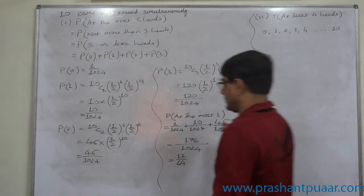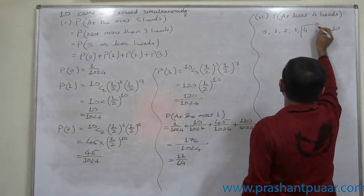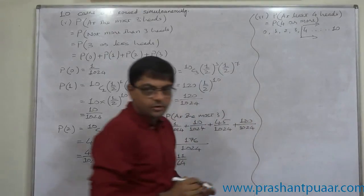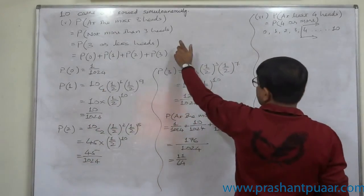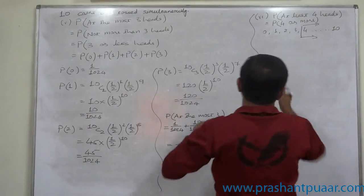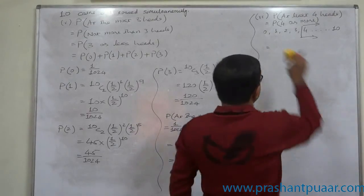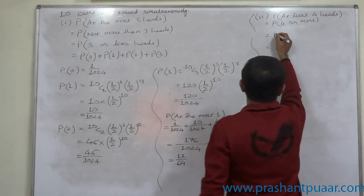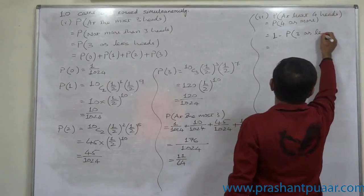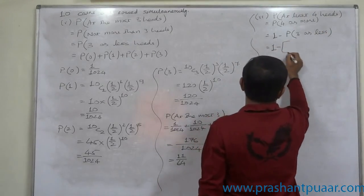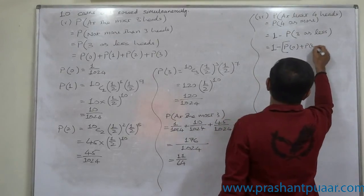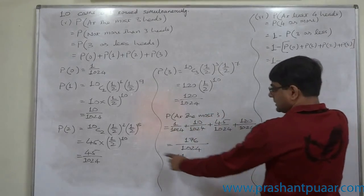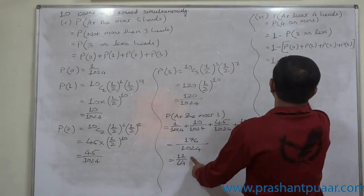Sixth case: probability of at least 4. Since 'at least 4' (4 or more) and '3 or less' are complement events, P(at least 4) = 1 − P(at most 3) = 1 − 11/64 = 53/64.